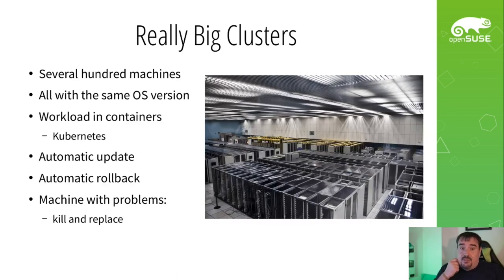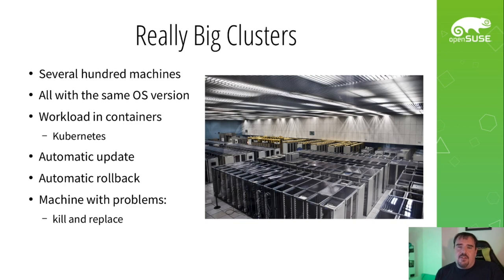Another example is the really big cluster scenario — not just a few machines you can easily micromanage, but with the traditional pet-cattle analogy, these aren't machines which are going to be micromanaged. You're talking about hundreds of machines, far too many for any one person or even a team to easily look after. They all need to be the same operating system version. You'll be talking about some kind of workload orchestration such as Kubernetes, and the need really strikes home: with hundreds or thousands of machines, you need automatic update, automatic rollback. And if there is any kind of problem machine, it's far more likely that machine is going to be killed and replaced rather than carefully brought back to regular working behavior.